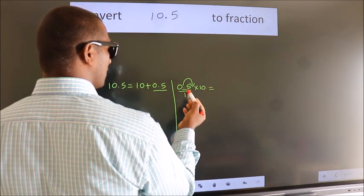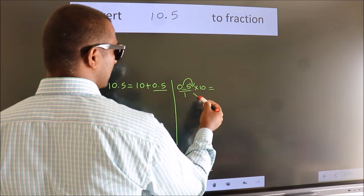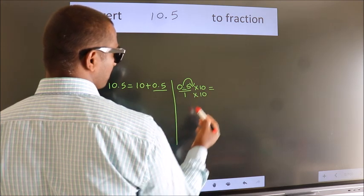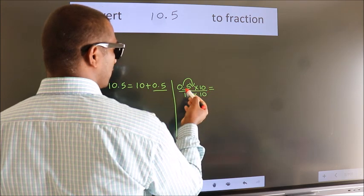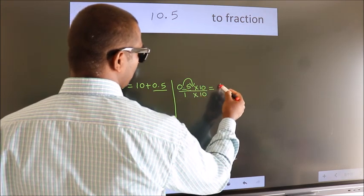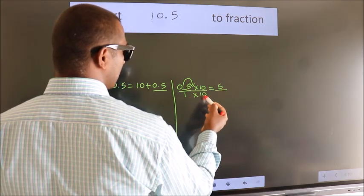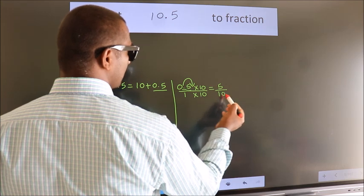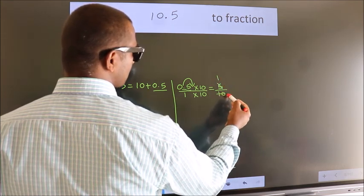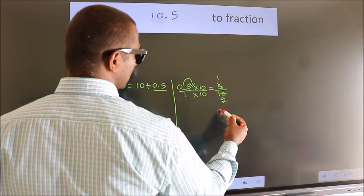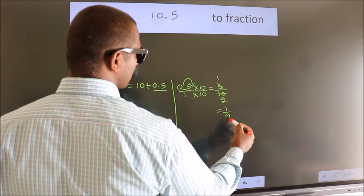Whatever you are multiplying in the numerator, in the denominator also do the same. Next 0.5 into 10 is 5. 1 into 10 is 10. Now I cancel with 5. 5 ones is 5, 5 twos is 10. So the fraction we got is 1 by 2.